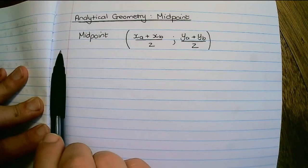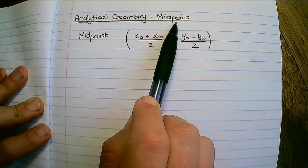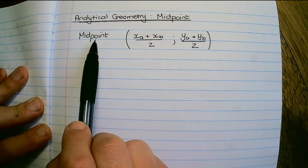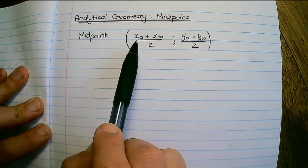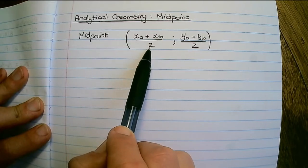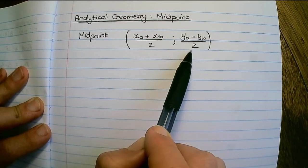In this video we will continue with analytical geometry and discuss the midpoint between two points. The midpoint between two coordinates has its x values added together divided by two and its y values added together divided by two.